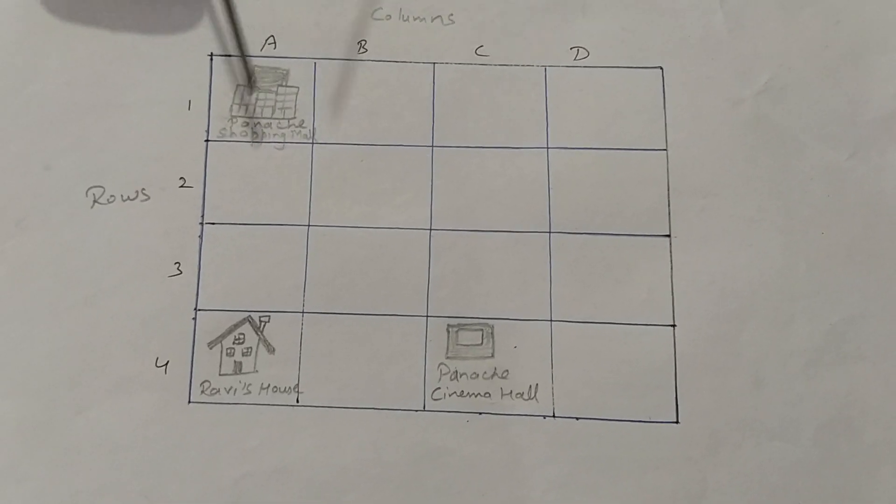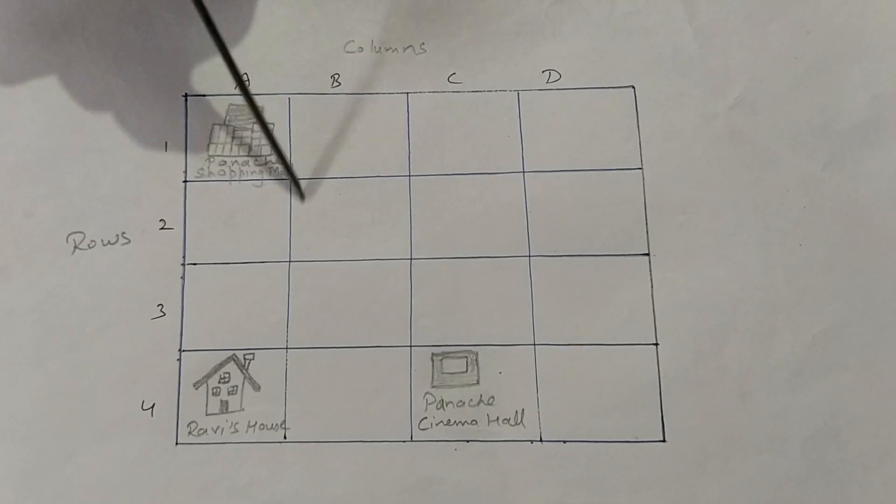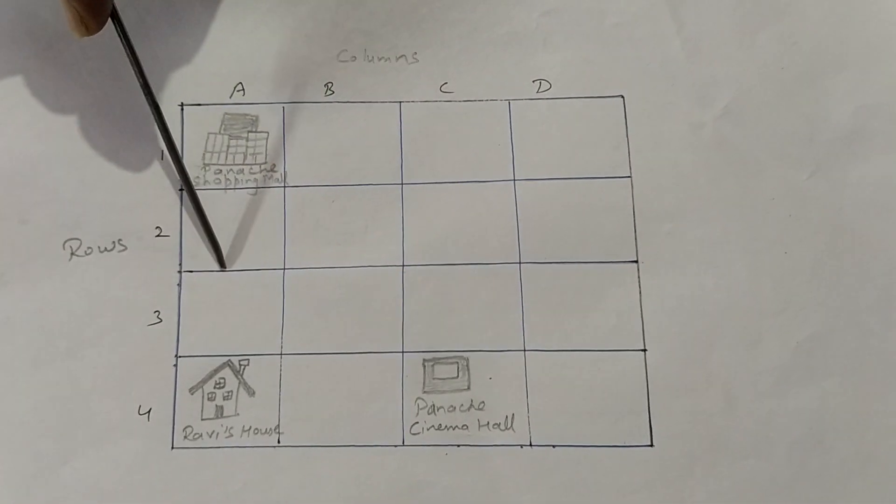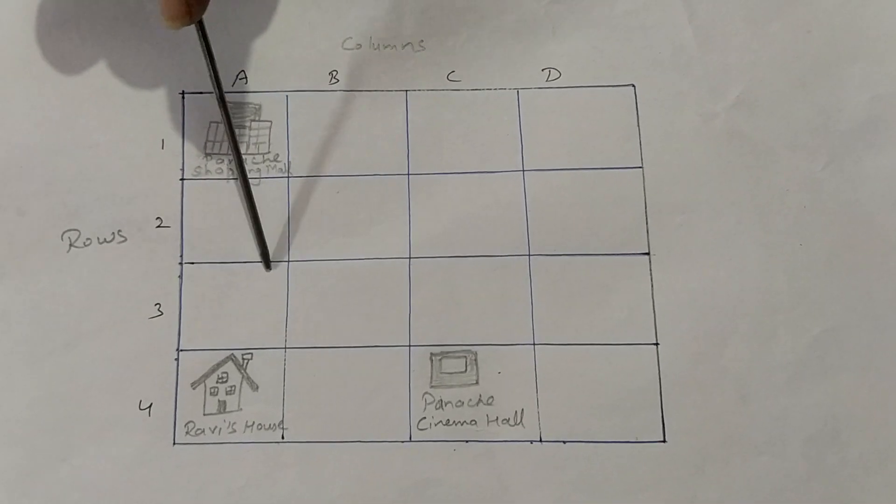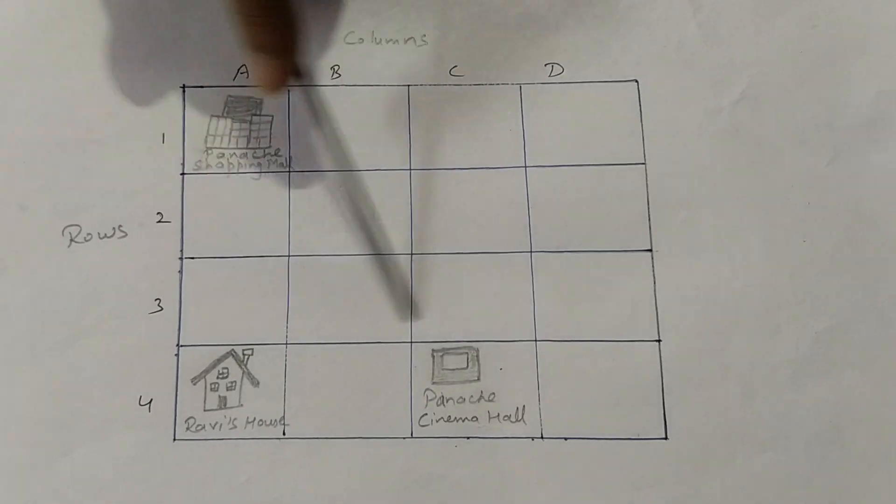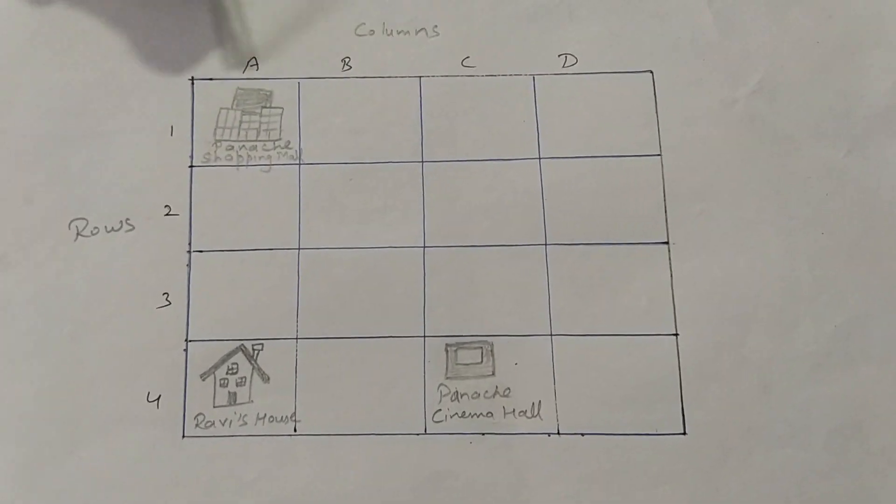I am going to explain about the grid. See, this is a grid. When longitudes and latitudes—these standing lines and these sleeping lines—meet each other to form a network of lines, it is known as a grid.